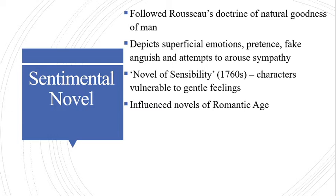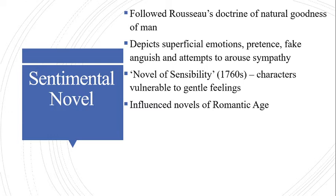The next important type is the sentimental novel, a literary genre popular in 18th-century England. The term denotes the overuse of pathetic effects, superficial emotions, pretence, vain assumptions of sorrow, fake anguish, and attempts to arouse sympathy. It focused on the distresses of the virtuous and attempted to show that humor and moral behavior were rightly rewarded. The sentimental novel also tried to show that the display of unrestrained emotion is the true evidence of kindness and goodness in human beings.